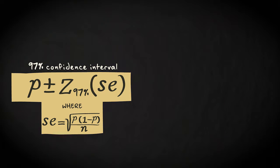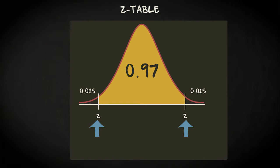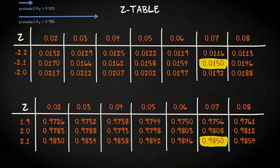First, we have to look up the relevant z-score in the z-table. That we employ the 97% confidence level means that we're interested in these z-scores. That means that we have to look up in the z-table the scores that correspond to a cumulative probability of respectively 0.015 and 0.985. We find them here and here. That's minus 2.17 and 2.17.